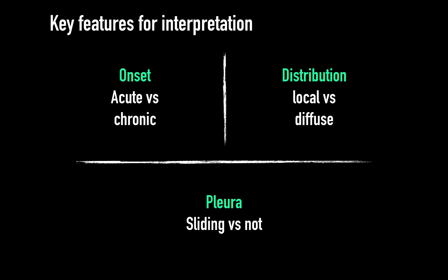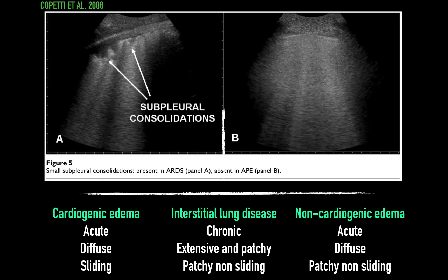Is the pleura sliding or not, or are there areas where the lung is spared? The three most common causes of extensive B-lines or interstitial pattern are cardiogenic or non-cardiogenic edema, as well as interstitial lung disease. Both types of edema tend to be diffuse, while interstitial lung disease is extensive but often patchy. An underappreciated feature is pleural sliding and texture — in inflammatory or fibrotic processes, the pleura is often irregular, non-homogeneous, and non-sliding, and this is frequently patchy rather than diffuse.